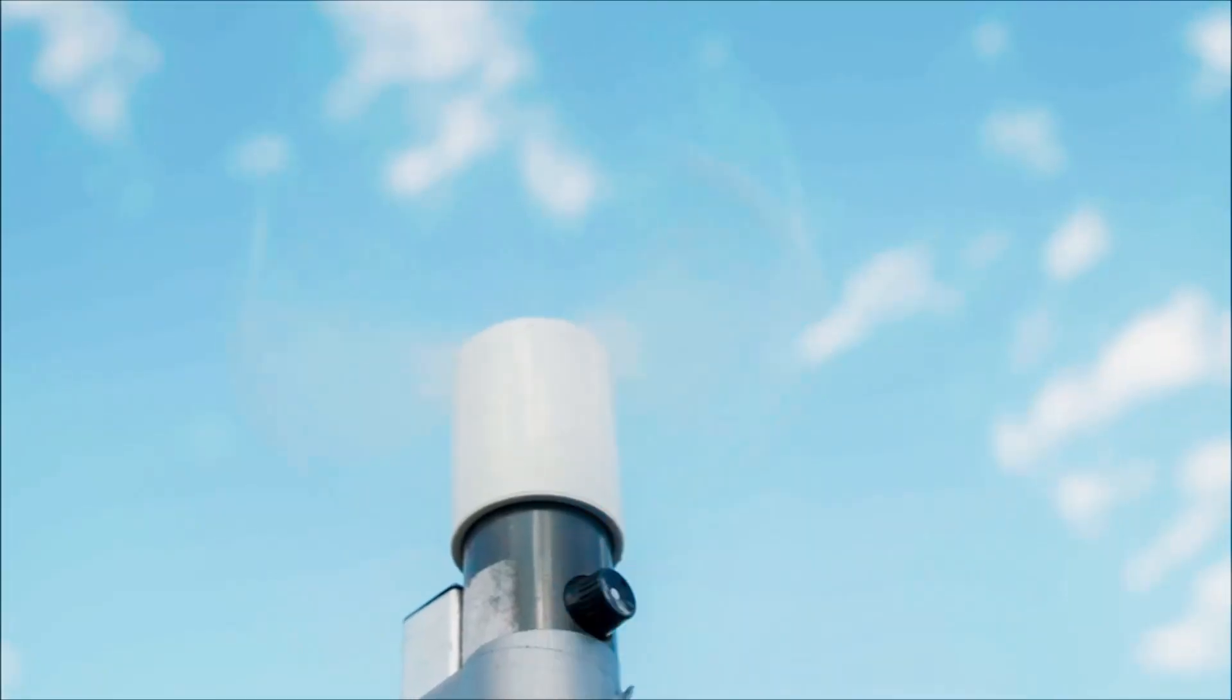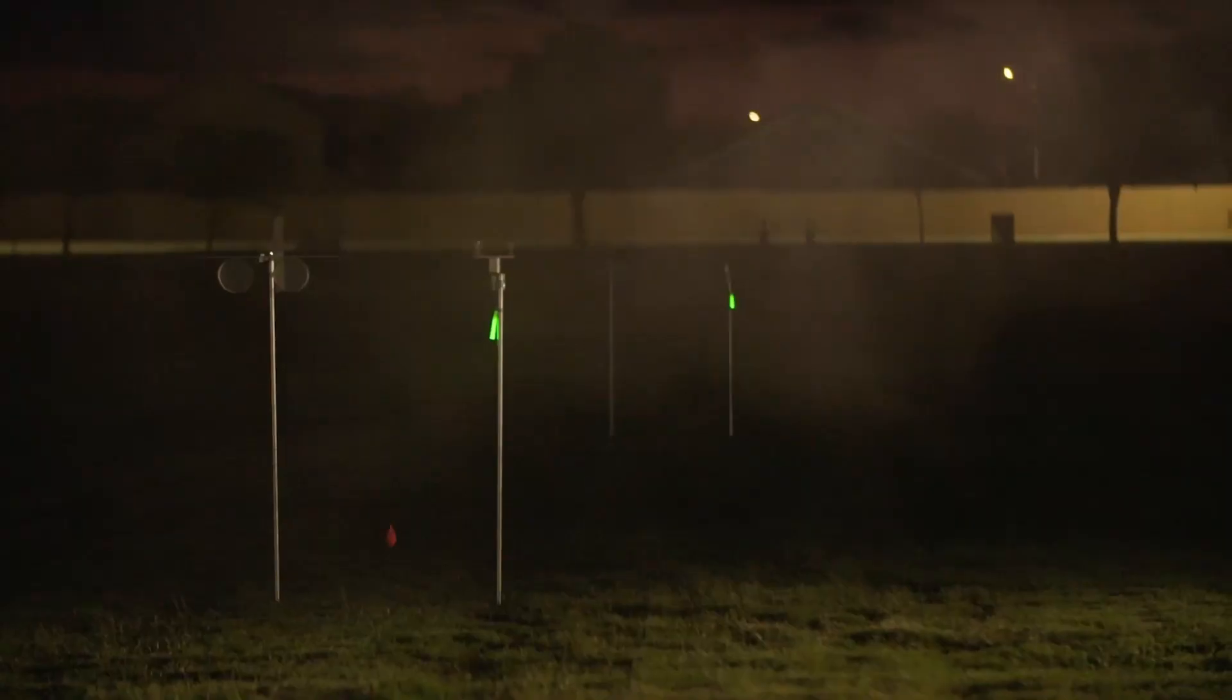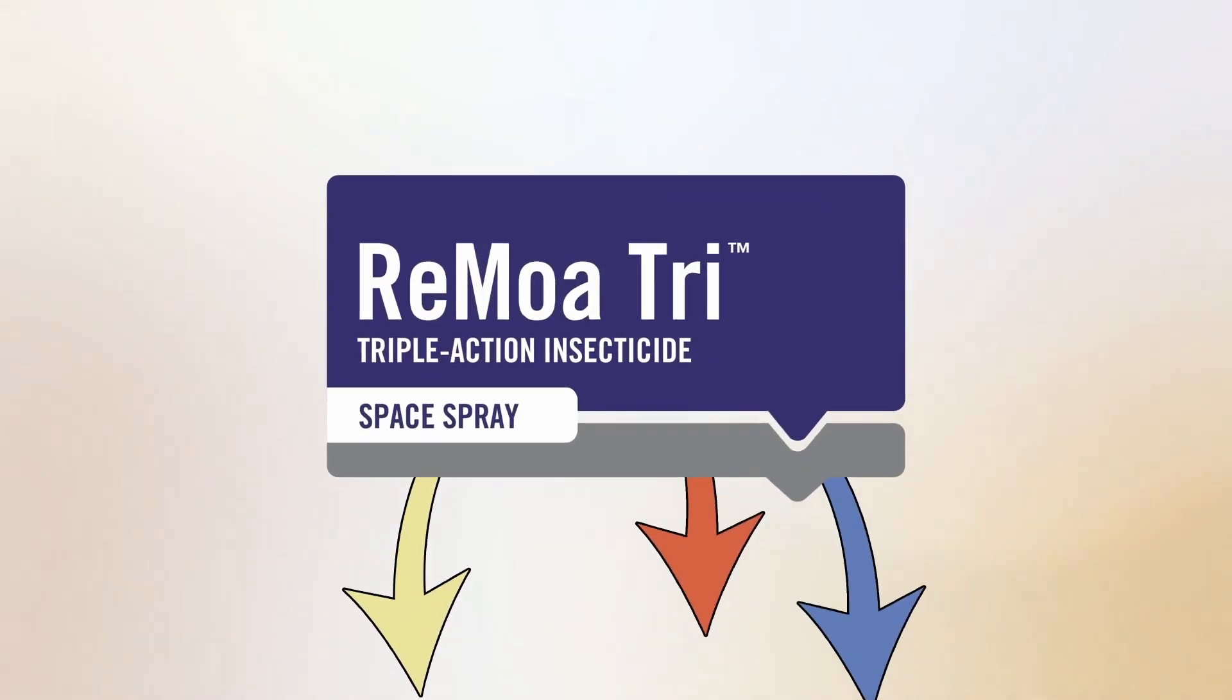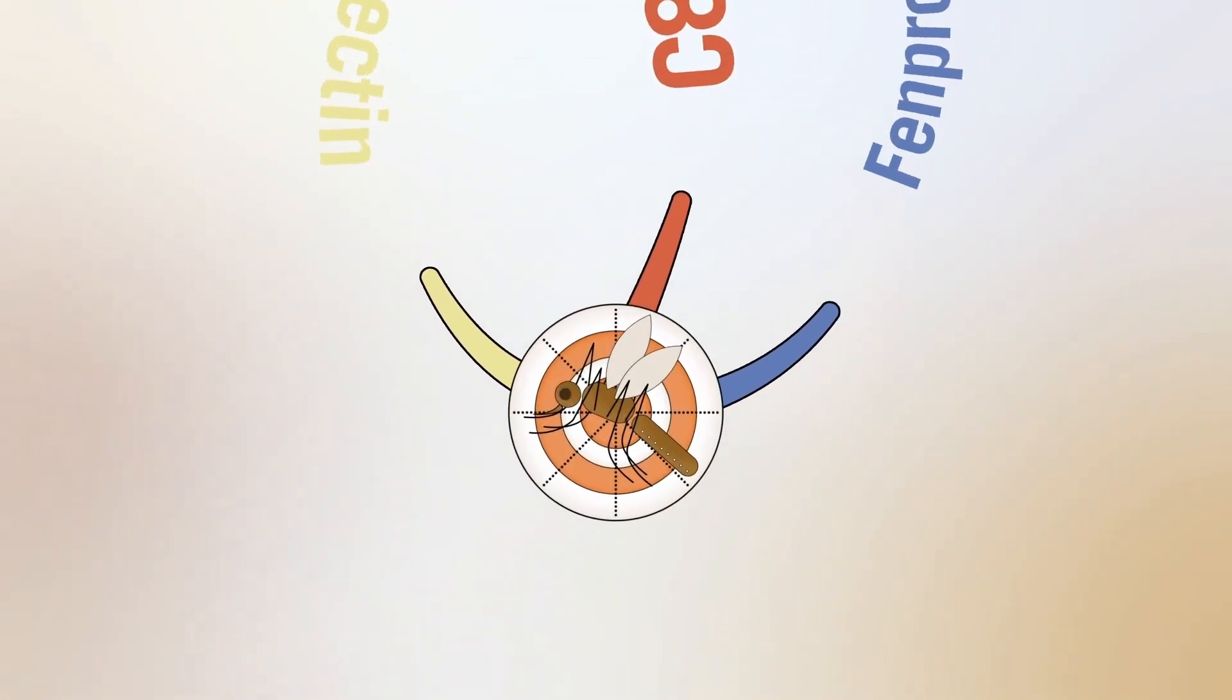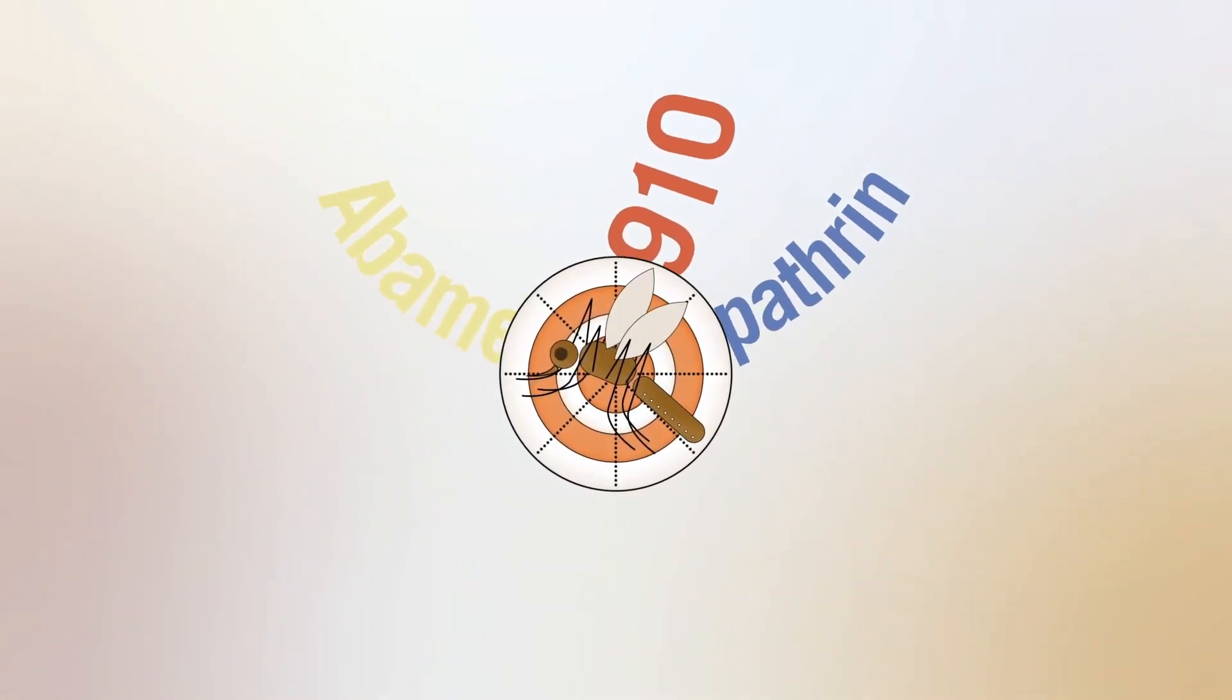Ramoa Tri is a breakthrough bio-rational space spray based on a bacterium, combining three new active ingredients with three different modes of action for effective mosquito resistance management.